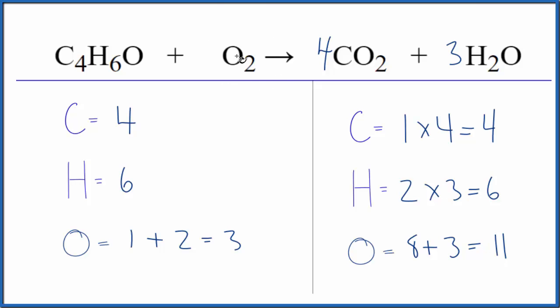We do have an oxygen here as well, so we could think about it as one plus some number would equal eleven. So I could put a five here. That would give me one plus two times five is ten. One plus ten, that would equal eleven. So one oxygen, two times five is ten, one plus ten, that would equal eleven, and that balances the equation.